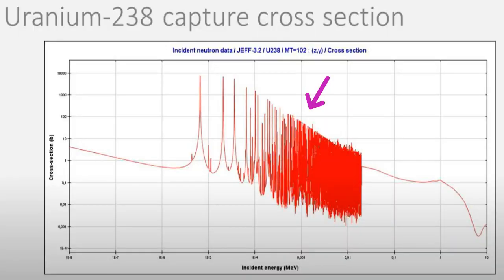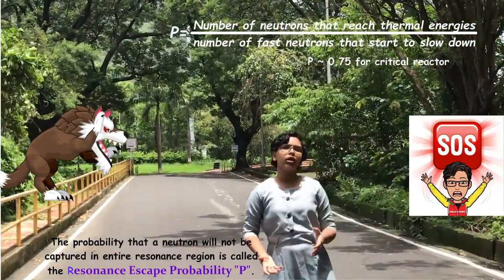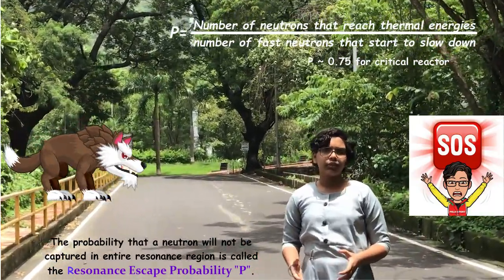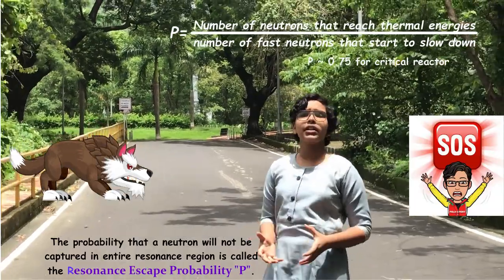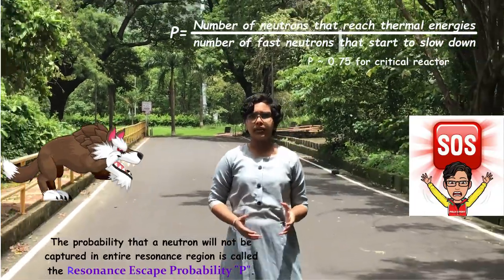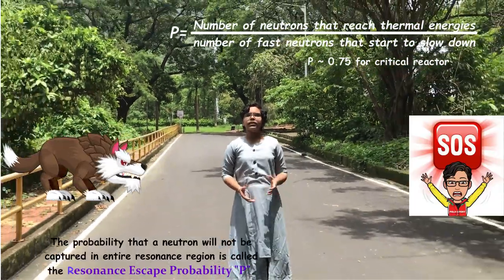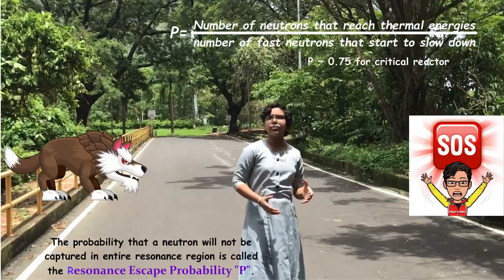You have reached the resonance energy levels and can get absorbed by resonance capture. Escaping resonance capture is very important, which is given by the third factor, resonance escape probability.